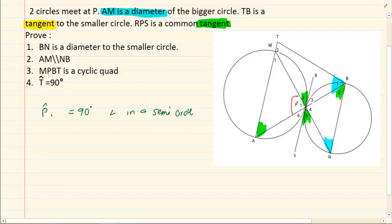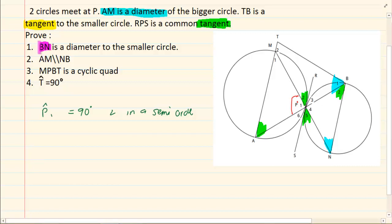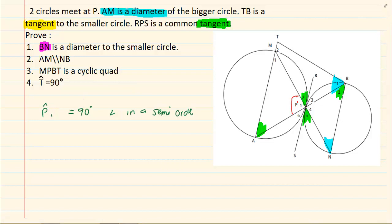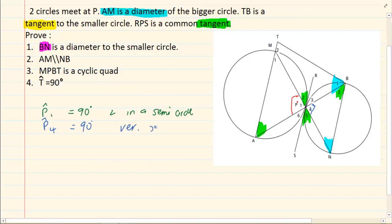They are saying we must prove that BN is a diameter of the smaller circle. Now what do we know about a diameter? A diameter produces an angle that is 90 degrees. We already have that P1 is equal to 90 degrees. But if P1 is equal to 90 degrees, what is P4? P4 is also equal to 90 degrees because they are vertically opposite — that is a rule from grade 9.